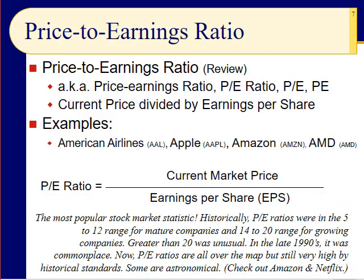Slide number seven: the price-to-earnings ratio is the most popular stock market statistic — you take price and divide by earnings, and it's readily available online. Historically, PE ratios were in the 5–12 range for mature companies, 14–20 for growing companies, and greater than 20 was unusual — appearing in the late 1920s, late 1960s, and late 1990s. Now PE ratios are all over the map, from very reasonable to astronomical.